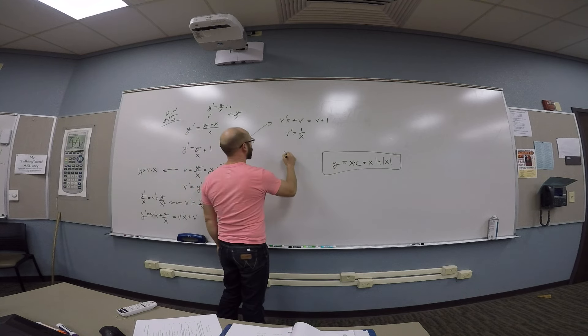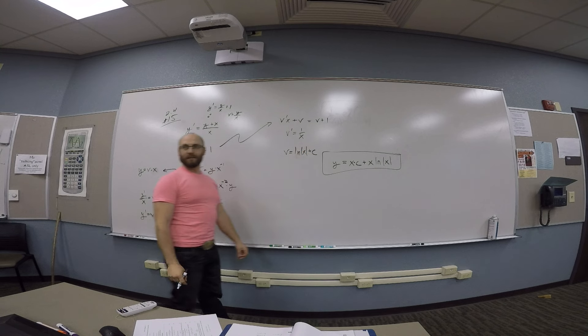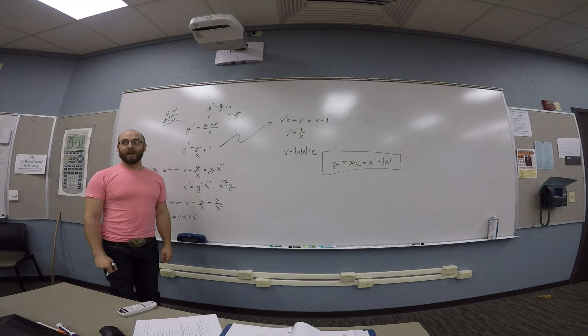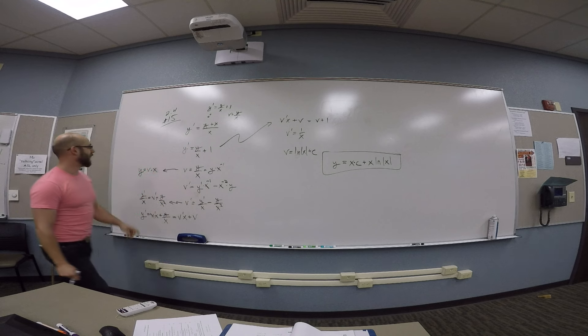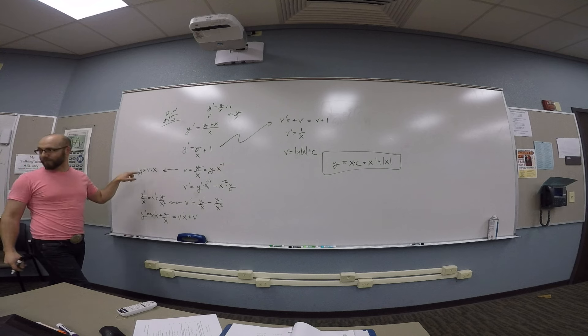So then I got v is natural log of the absolute value of x plus a constant. But wait, y over x back into v. So then I plug back in here.